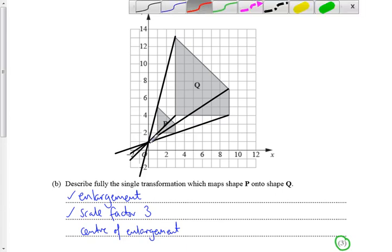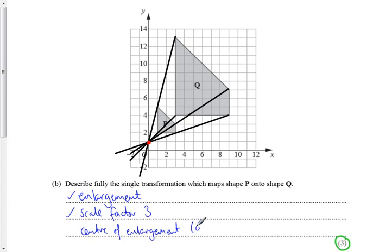So this bit here must be our centre of enlargement. So for the last mark, you've got to say what you need is a centre of enlargement. You've got to give the coordinates, and the coordinates are 0 across in the x direction, 1 up in the y direction, and that will be your third mark. You have to mention each bit in order to get the full three marks for this question.